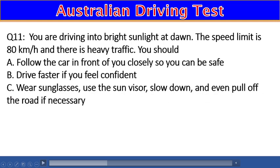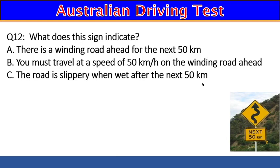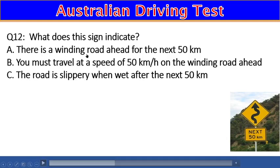Question 12: What does this sign indicate? A) There is a bending road ahead for the next 50 km, B) You must travel at 50 km/h on the winding road ahead, C) The road is slippery when wet after the next 50 km. The right answer is A — there is a bending road ahead for the next 50 km.